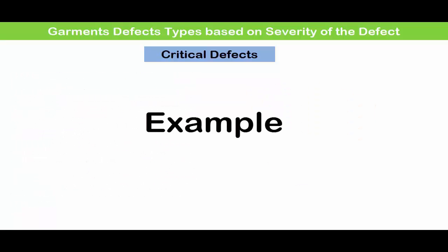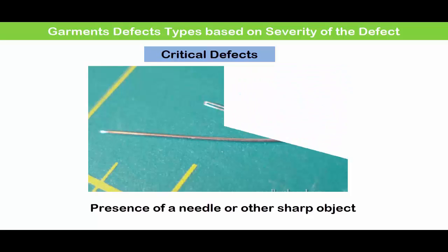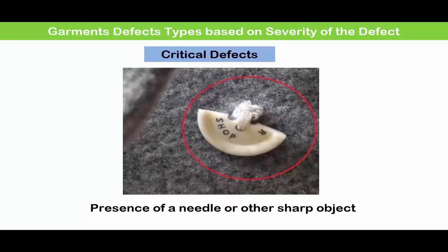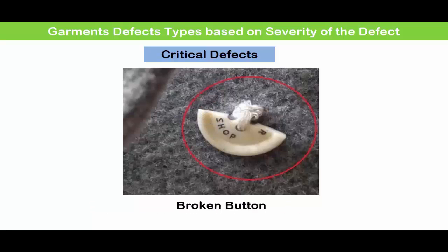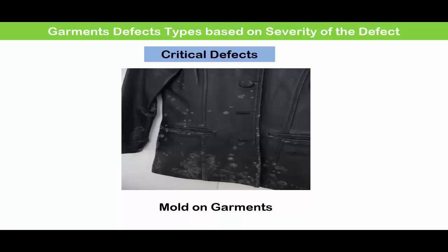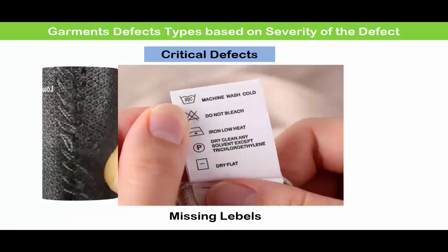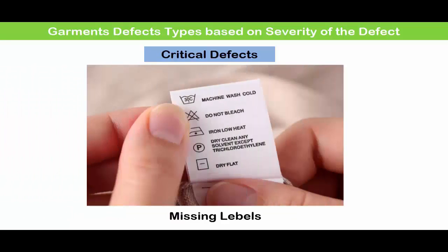Some examples of critical defects in garments are: the presence of a needle or sharp object, broken button, mold on garments, threads or seams which are extensively long or loose, and missing labels.